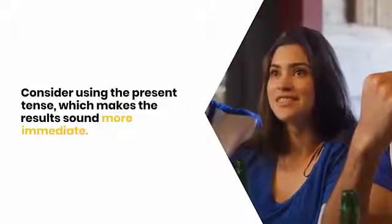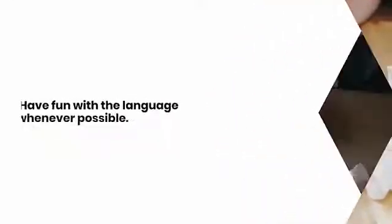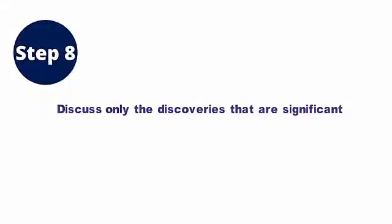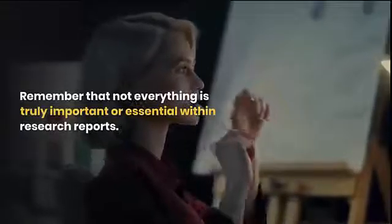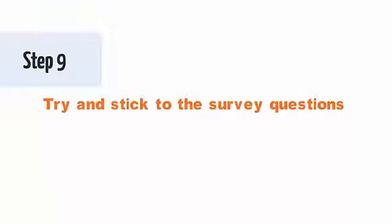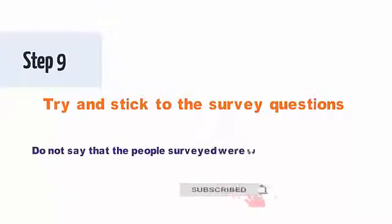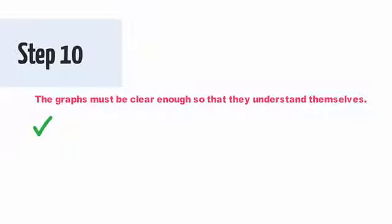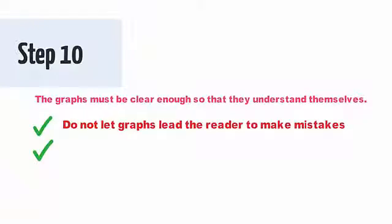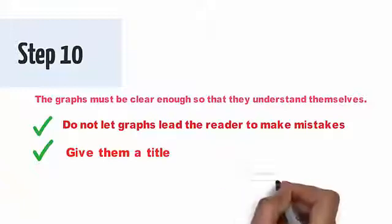Tip 8: Discuss only the discoveries that are significant. If some data are not really significant, do not mention them. Remember that not everything is truly important or essential within research reports. Tip 9: Try and stick to the survey questions. Do not say that the people surveyed were worried about an issue when there are different degrees of concern. Tip 10: The graphs must be clear enough so that they understand themselves. Do not let graphs lead the reader to make mistakes. Give them a title, include the indications, the size of the sample, and the correct wording of the question.